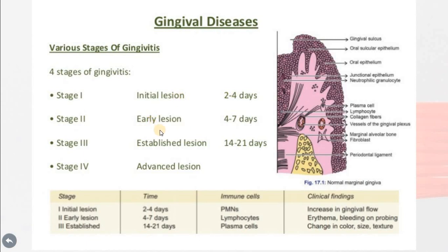In stage two, where the disease becomes clinically visible, it takes four to seven days. There will be increased vascular permeability, vasodilation, and gingival crevicular fluid flow. There will be a large number of infiltrating leukocytes, mainly neutrophils and lymphocytes. The lymphocytes will also predominate in the connective tissue. This will lead to degradation of fibroblasts and collagen destruction, resulting in a collagen-depleted area. There will also be a proliferation of the junctional epithelium and the sulcular epithelium into the collagen-depleted area, leading to step-by-step atrophying of the connective tissue.